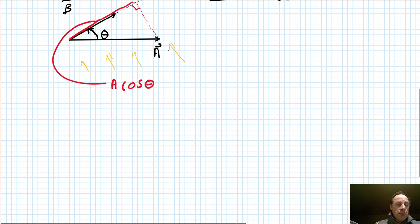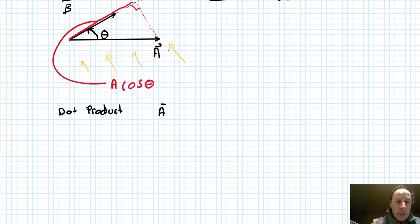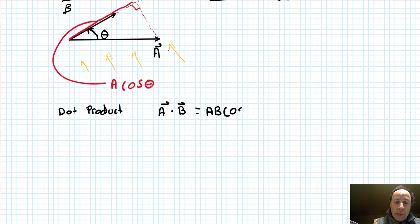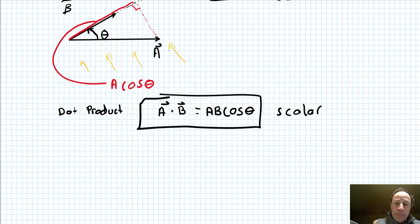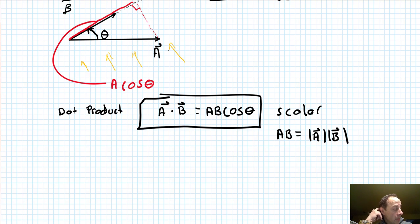This result leads us to our generalization of the dot product. When you dot vector A into vector B, your result is the magnitude of the first times the magnitude of the second times the cosine of the angle between them: A·B = |A||B|cosθ. This is a scalar result.